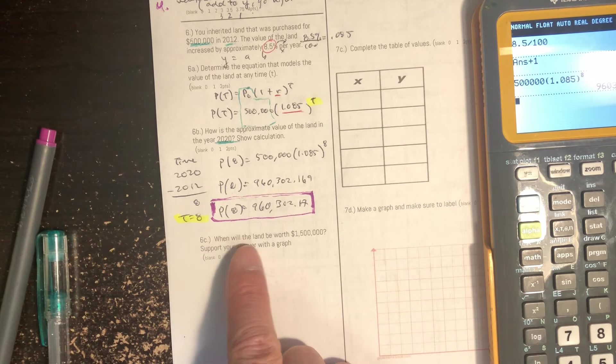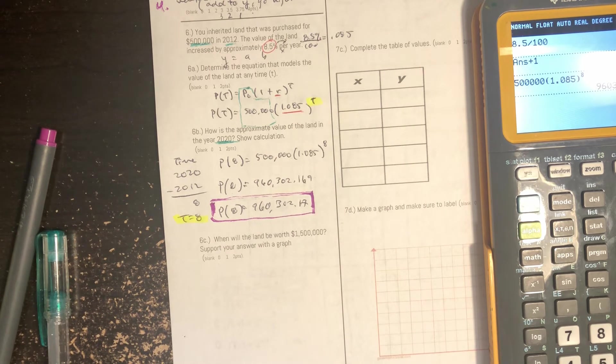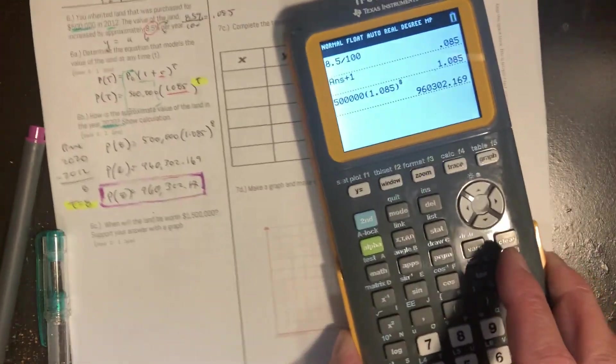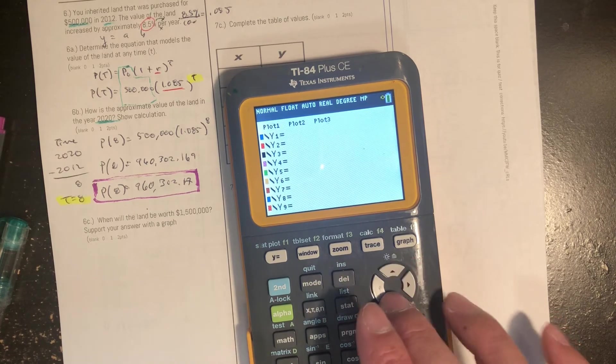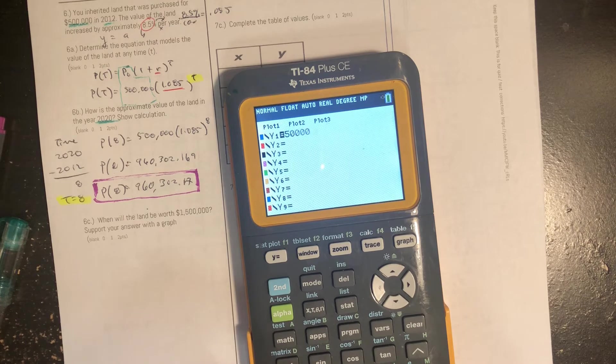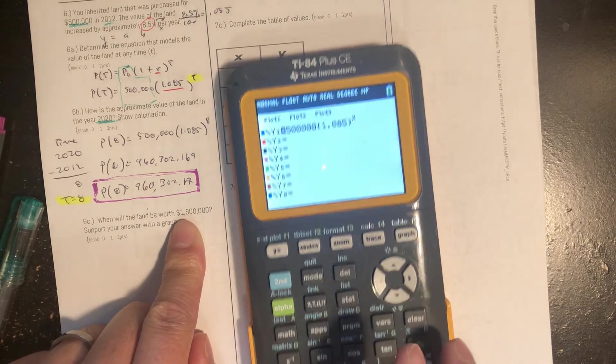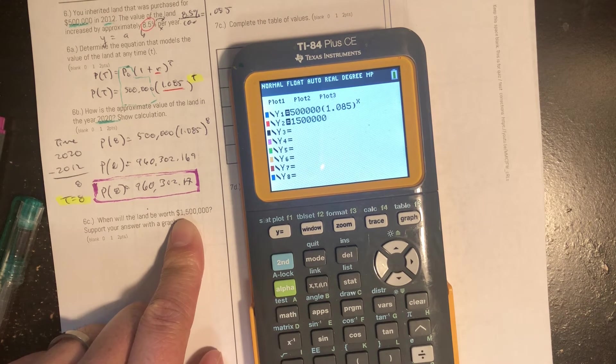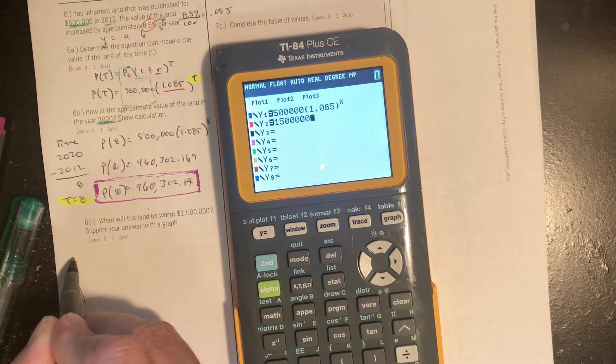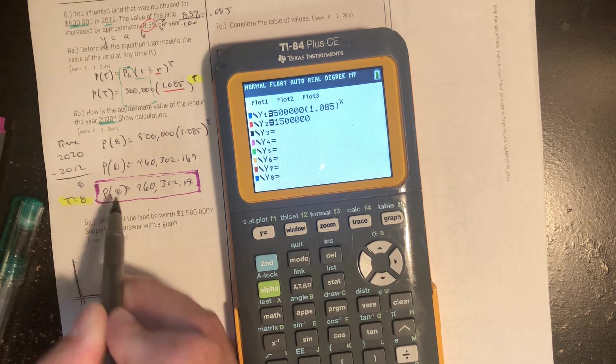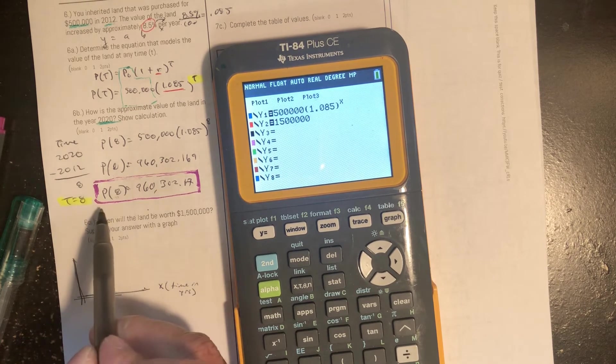Question 6c: When will the land be worth $1,500,000? Support your answer with a graph. Okay so should have just punched that into the calculator first. Let's clear all these out. 500,000 times 1.085 to the x power. And then this one I want it to be 1,500,000. And then now I need to think about my graph. We don't know how much time it'll be but I know that the x value measured in time in years, we already know after 8 years it's already almost a million dollars. So maybe max 20 or 15 years.